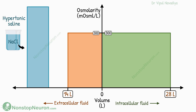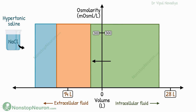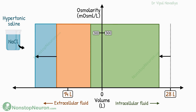Next is hypertonic saline, which is a solution with higher osmolarity than body fluids. Adding such fluid first increases the osmolarity of the extracellular fluid, creating an osmotic gradient from intracellular to extracellular fluid. So the water moves out of the cells until equilibrium is achieved, causing a decrease in intracellular fluid volume. The extracellular fluid volume increases, and this increase includes both the fluid added from outside as well as the fluid that came out of the cells. There is a rise in osmolarity on both sides — both fluids now have a higher osmolarity than before.